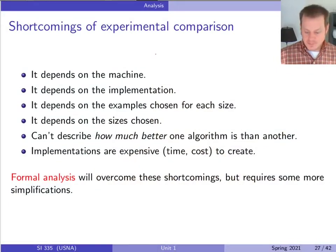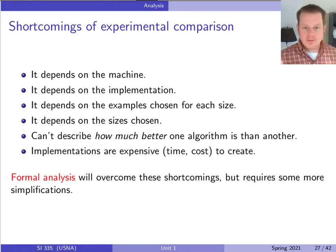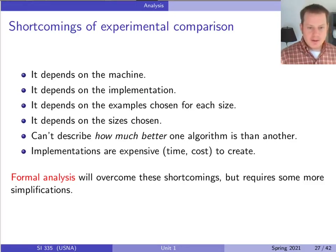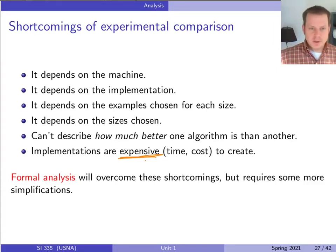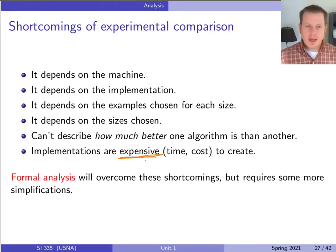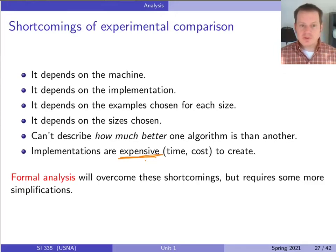Where we ended up last time was talking about the shortcomings of doing experiments. Even though we can get a lot of good ideas, one of the big problems is that implementations and experiments are really expensive and careful to do. That's kind of the point of our formal analysis. A lot of this will be some ideas you're already familiar with, but I want to lay everything out because all of these assumptions we make in formal analysis are things that will change, and we should be aware of what they are.